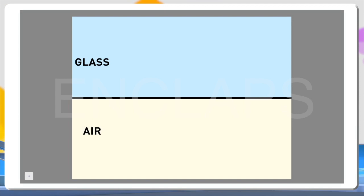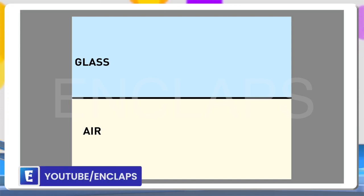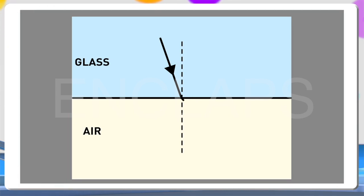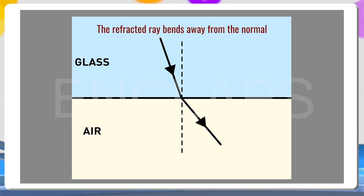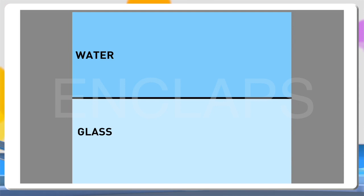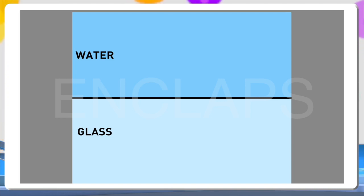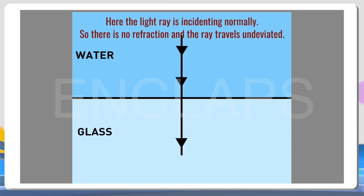This next figure shows a glass-air interface where the light ray is coming from glass to air — from a medium of greater optical density to one of lower optical density — so the refracted ray bends away from the normal. In this diagram, you can see a water-glass interface. Since the light ray is coming from glass to water, it is traveling from higher to lower optical density. But here the light ray is incident normally, so there is no refraction and the ray travels undeviated.